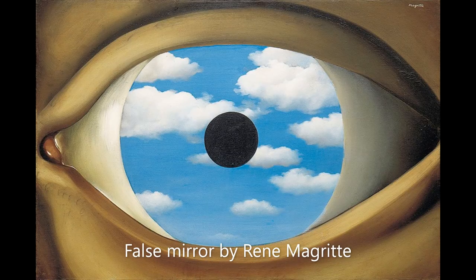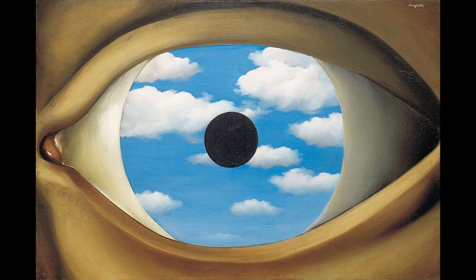In René Magritte's work The False Mirror, he created a large eye and it is said to be a window into his mind and a way to express his imagination. What a perfect way to express surrealism in an art form.